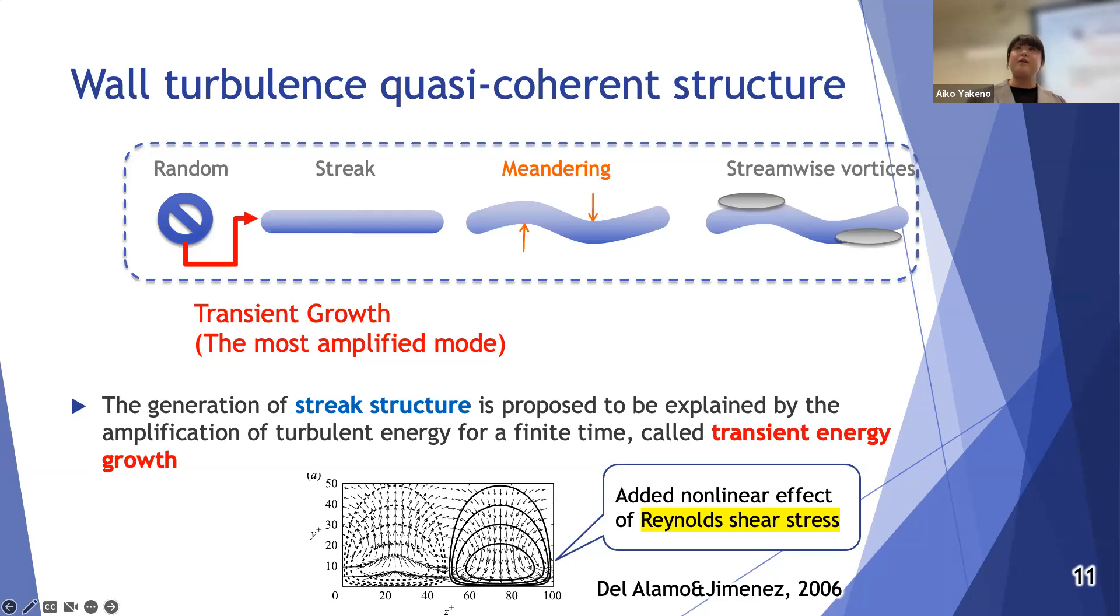Streamwise vortices are caused by destabilization and meandering of the streak structure. Recently the generation of streak structure is proposed to be explained by the amplification of turbulent energy for a finite time, called transient energy growth. This is one of the works that is consistent with the DNS result in the optimal transient growth mode.